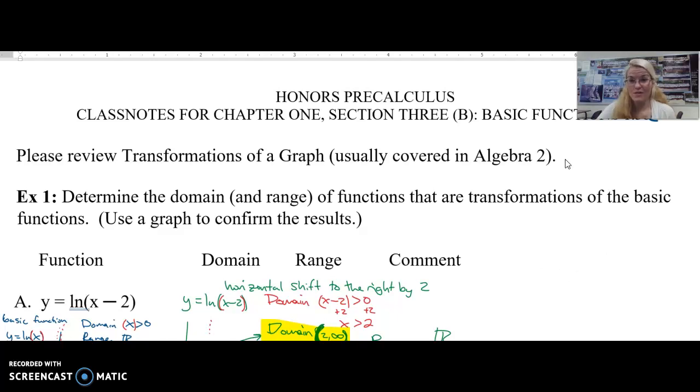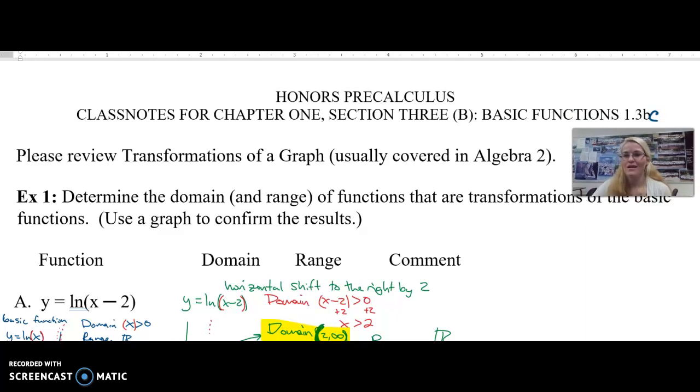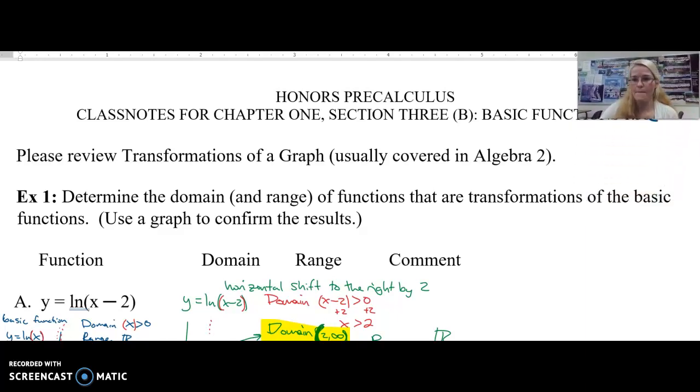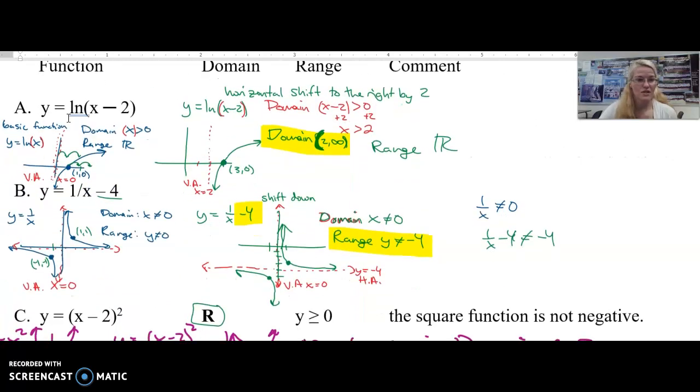All right, so let's finish up talking about, this is 1.3 BC. Let's finish talking about some of our basic functions with some simple transformations. So we talked about how the natural log function, if I have natural log of x minus 2, it shifts the graph over 2 to the right. And so the domain changes.